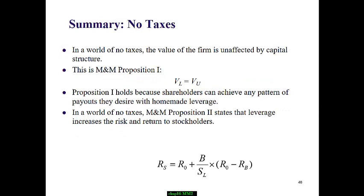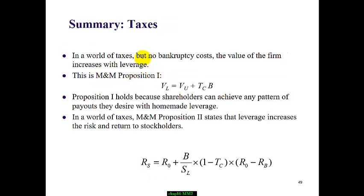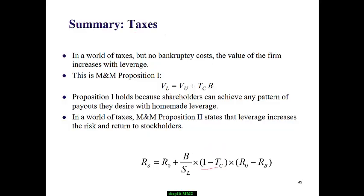To summarize: we learned MM Propositions under two assumptions. Without corporate tax, capital structure choice has no impact on firm value, but leverage does increase cost of equity. With corporate tax, capital structure matters — more leverage increases firm value, and the cost of equity still increases with leverage but at a slower pace. That's all for MM theory.